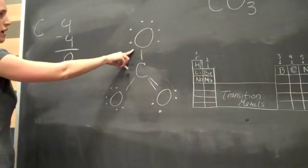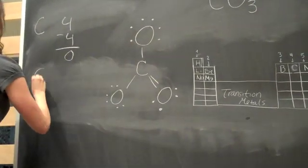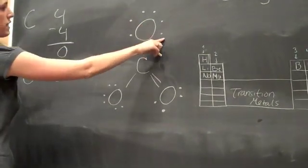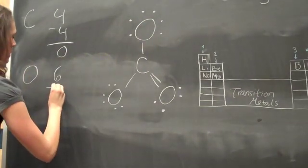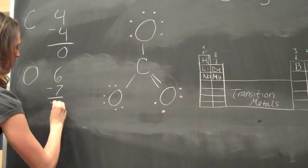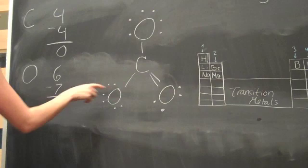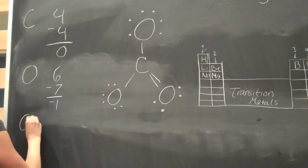And then for this oxygen, you will have six valence electrons. Two, four, six, seven. So six minus seven will be negative one. And you have the same structure over here for this oxygen. So that will be the same equation.